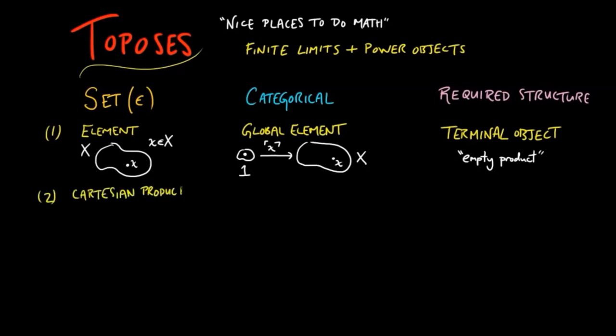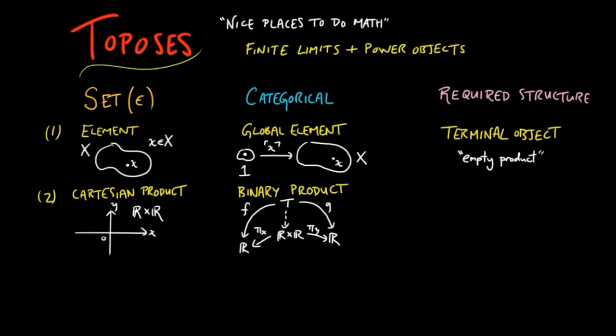Second, if we want to model space, we need a notion of a Cartesian product. The categorical notion is a binary product. It is uniquely specified up to unique isomorphism by the universal mapping property it enjoys, and this allows us to decompose more complicated functions into its components. The existence of a terminal object, which is an empty product, and binary products, is enough to prove that the category has finite products.